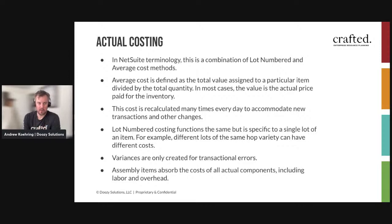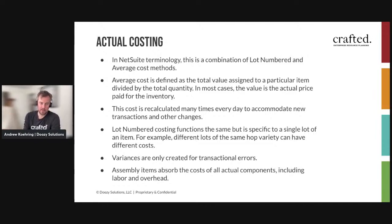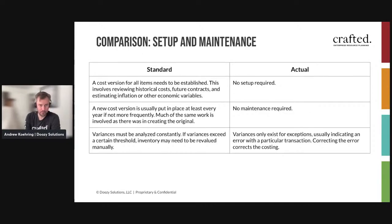For assembly items — taking raw materials and turning them into a different good — the way these costing methods function is that you absorb all of those costs into whatever you produce. You're applying labor and overhead dynamically as well, so it's really reflecting the true cost of manufacturing, not necessarily defined by a standard. Let's take a look at what it takes to set up both of these methods.